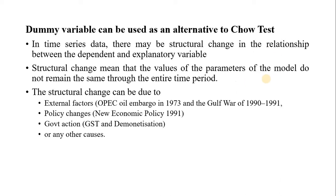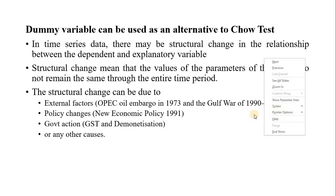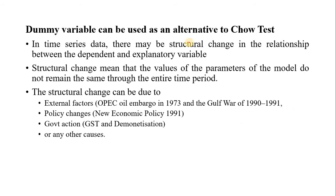In this lecture, what we are going to see is how we can use the dummy variable method as an alternative to the Chow test. This term may be new to you. The Chow test is basically used to check whether there is any structural change in a relationship or not. Structural change may happen only in time series data — that means when we use time series data, there may be changes in the relationship over a period of time.